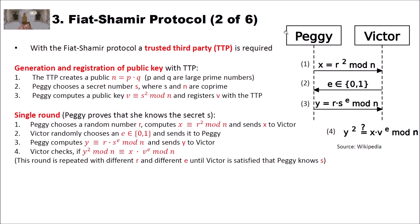They perform this protocol r times because Peggy wants to authenticate to Victor that she knows the secret. For example, if Victor is a server, Peggy performs this protocol with the server, and once Victor is convinced that Peggy knows the secret, he gives her access to some system or application on the server.